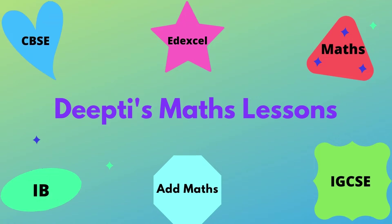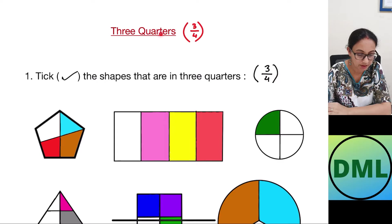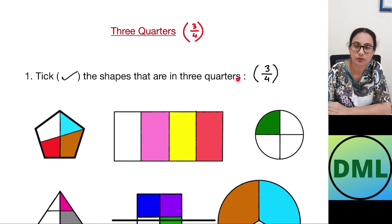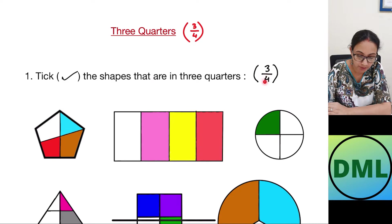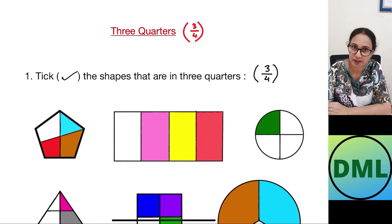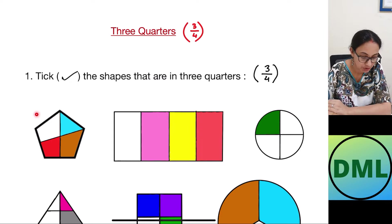Hello students, in today's video we are going to see three quarters, or three-fourths, of a fraction for Year 2 students. Let's get started. Three quarters means three by four. Tick the shapes that are in three quarters — that means out of four equal parts, three parts should be shaded.